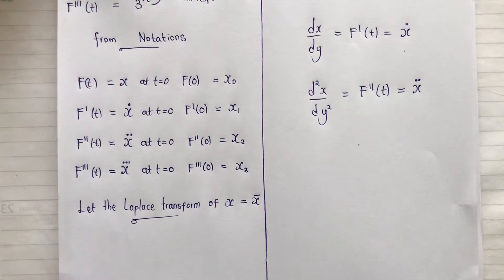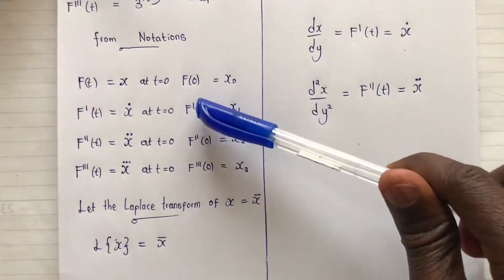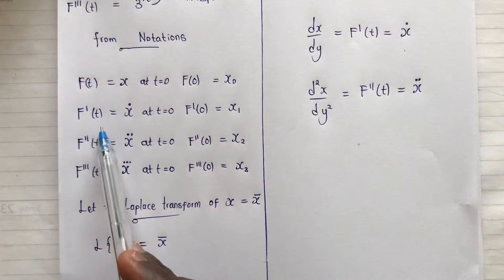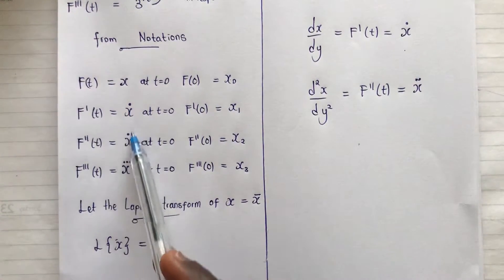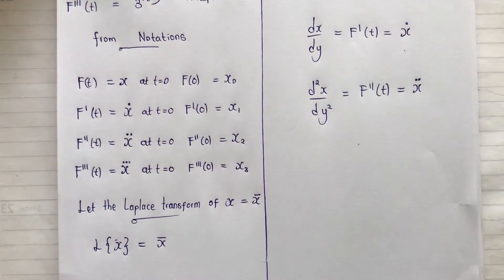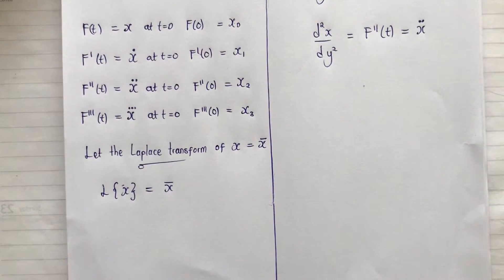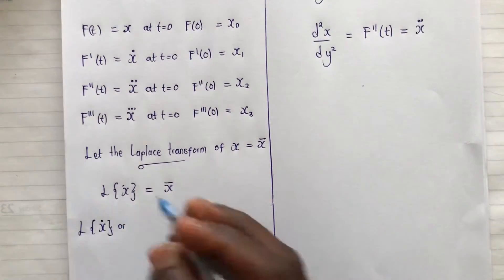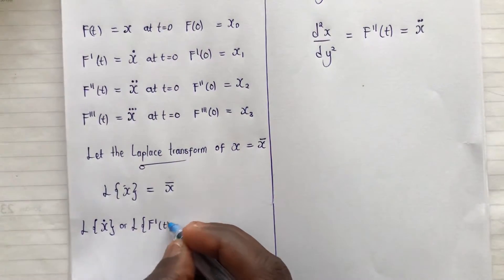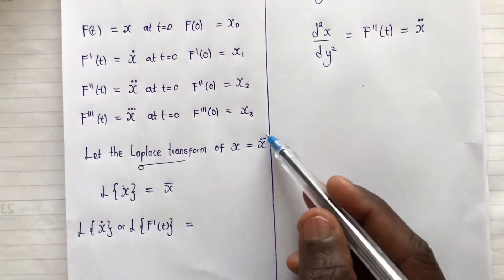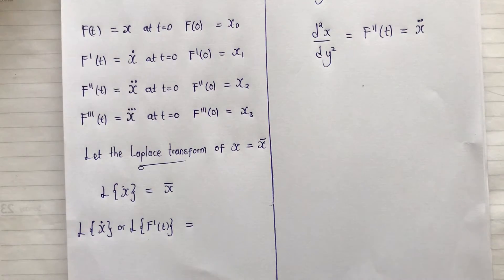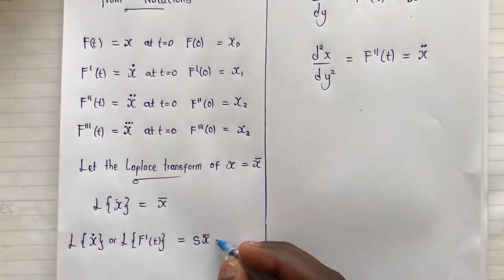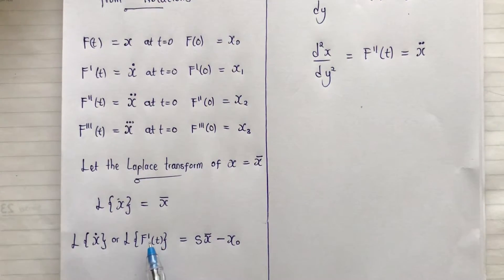Assume that the Laplace transform of variable x is equal to X̄ (x-bar). Now what will be the Laplace transform of ẋ, ẍ, and x-triple-dot? For the first derivative, the Laplace transform of f'(t), which is L{ẋ}, equals s times X̄ minus x₀. So: L{ẋ} = sX̄ - x₀. This is the Laplace transform of the first derivative of x.